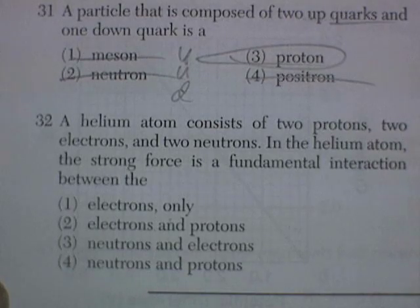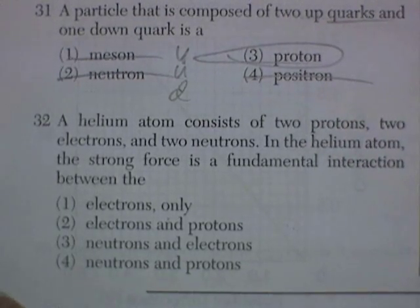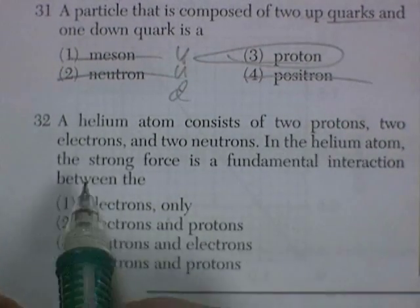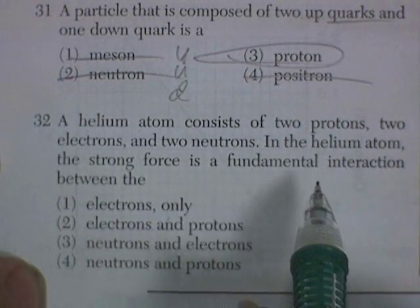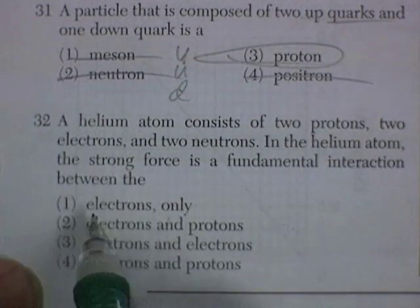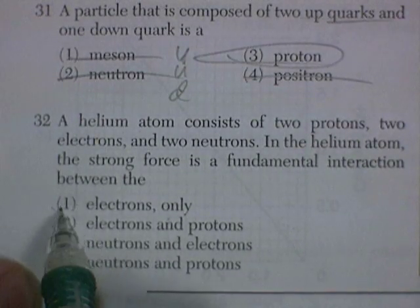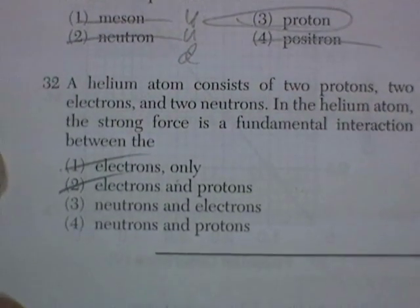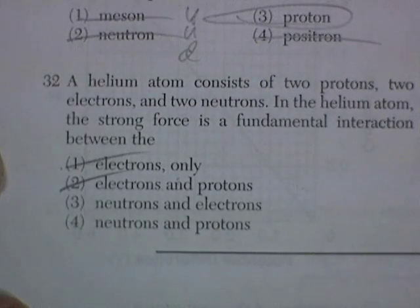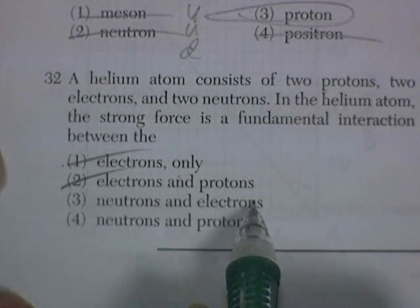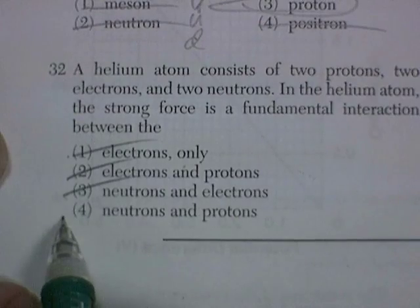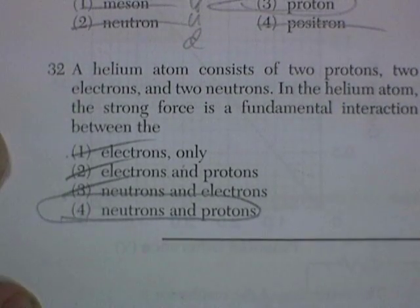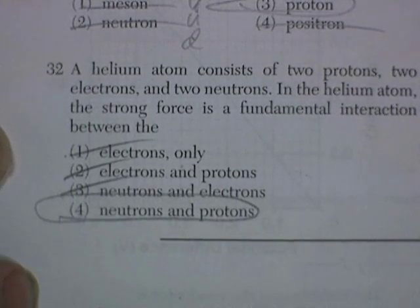A helium atom contains two protons, two electrons, and two neutrons. In the helium atom, the strong force is a fundamental interaction between the, well, the electrons would be electricity. Electrons and protons would be electricity. Electrons and neutrons don't have an interaction. It's subatomic forces that hold the thing together, the strong force. Otherwise, we'd have problems.